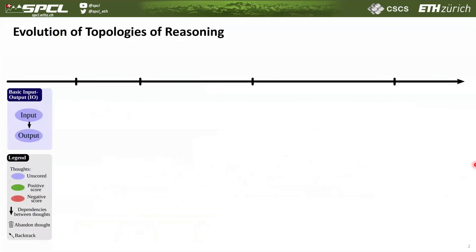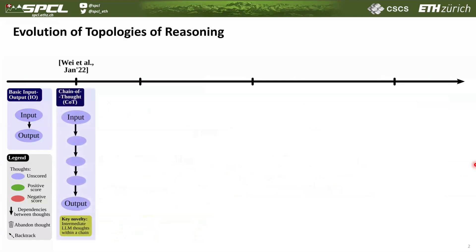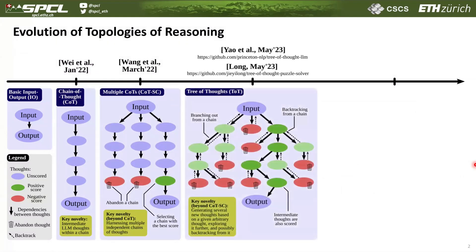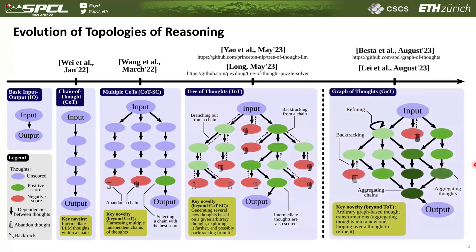We start the paper by taking a look at the evolution of something we call topologies of reasoning, which is a common framework that we propose to reason about all these different prompting schemes. We overview the development starting from chains of thoughts, via different forms of trees of thoughts, up to graphs of thoughts.